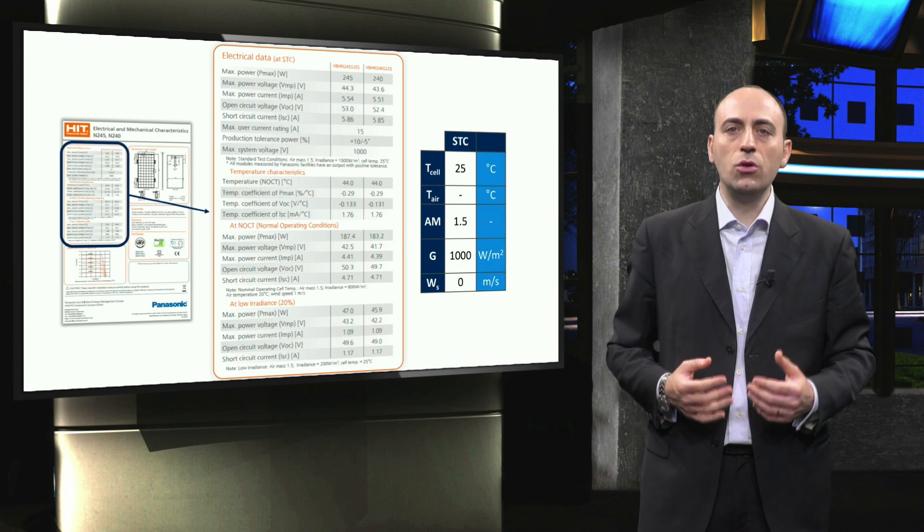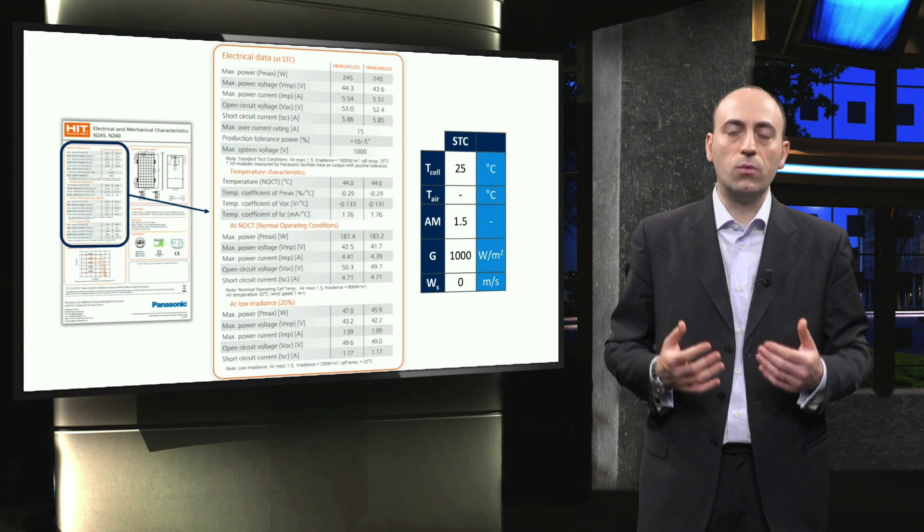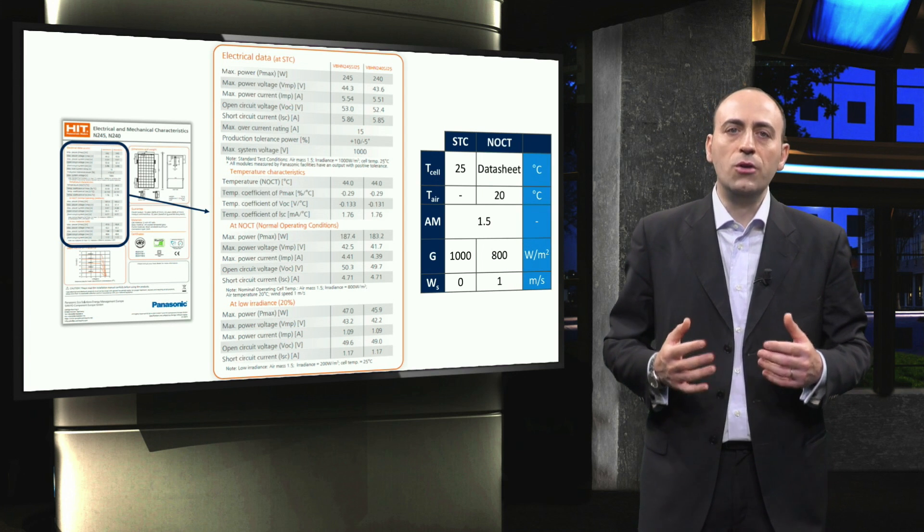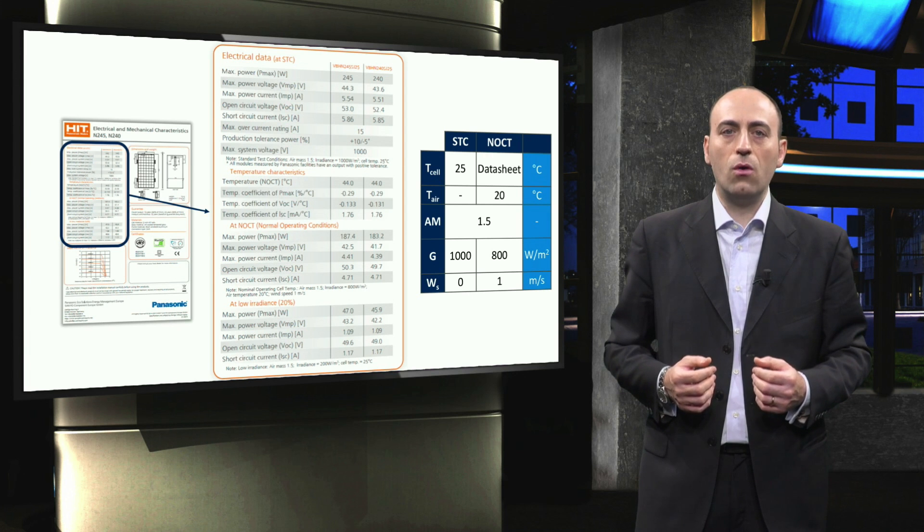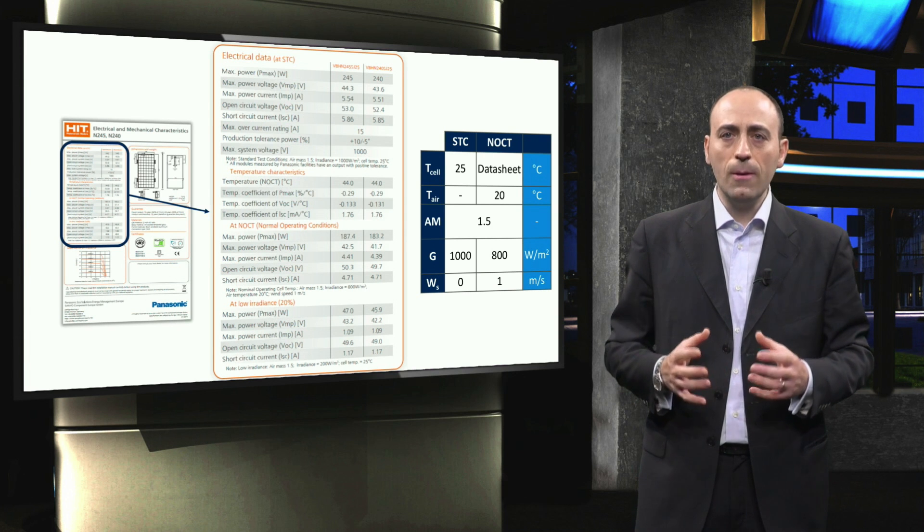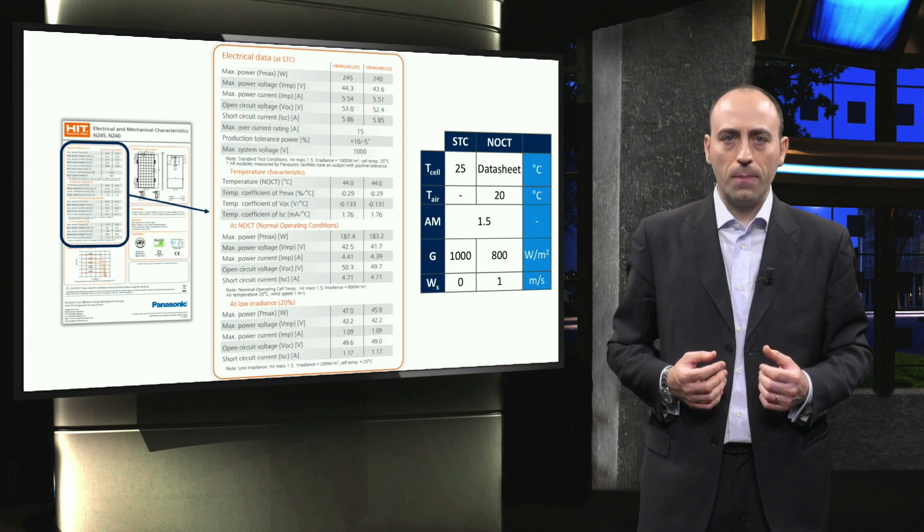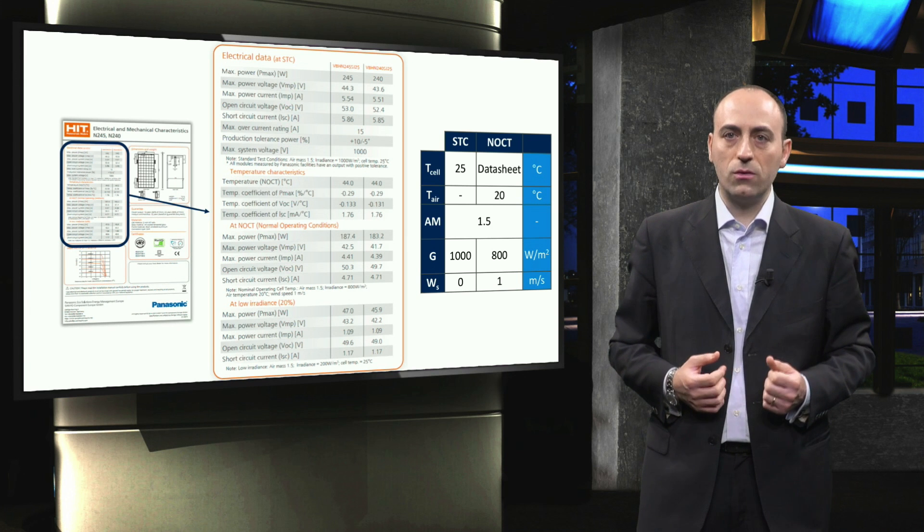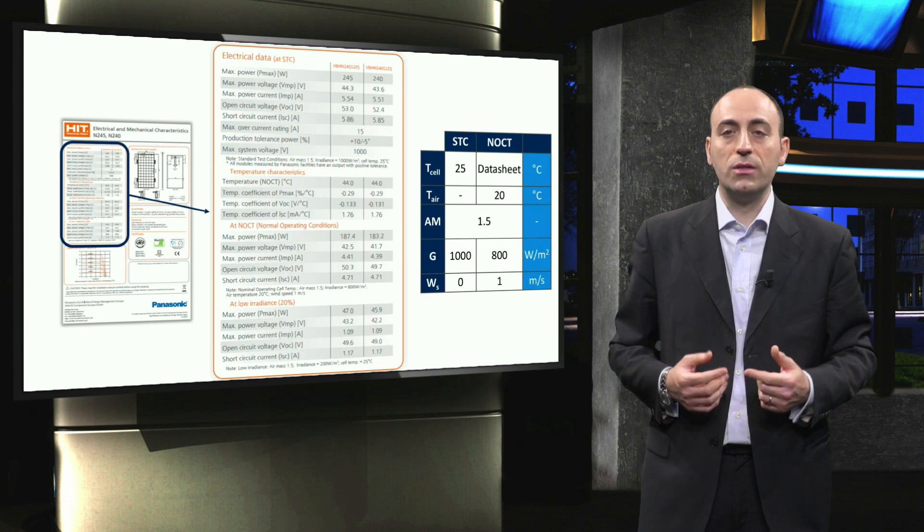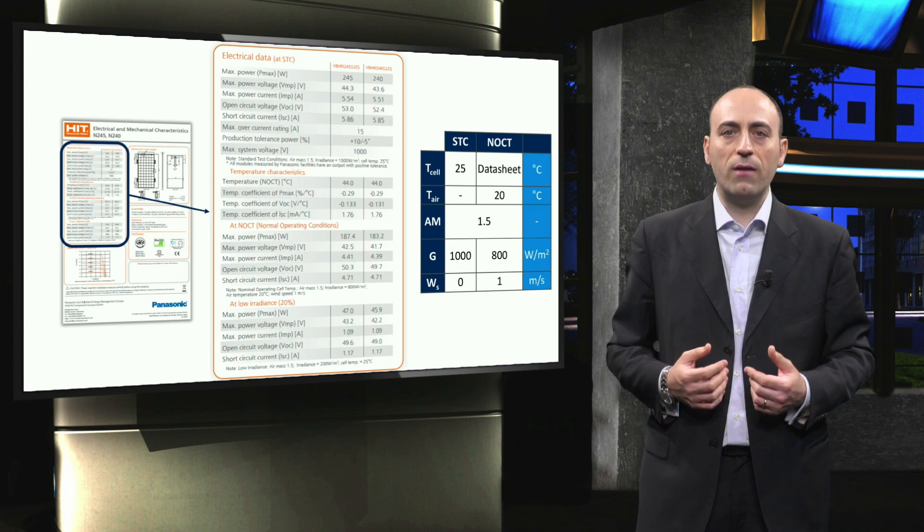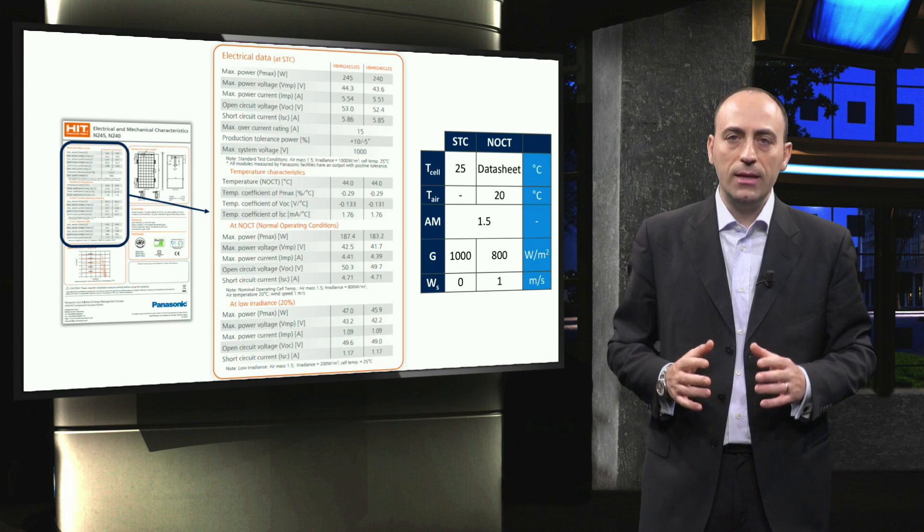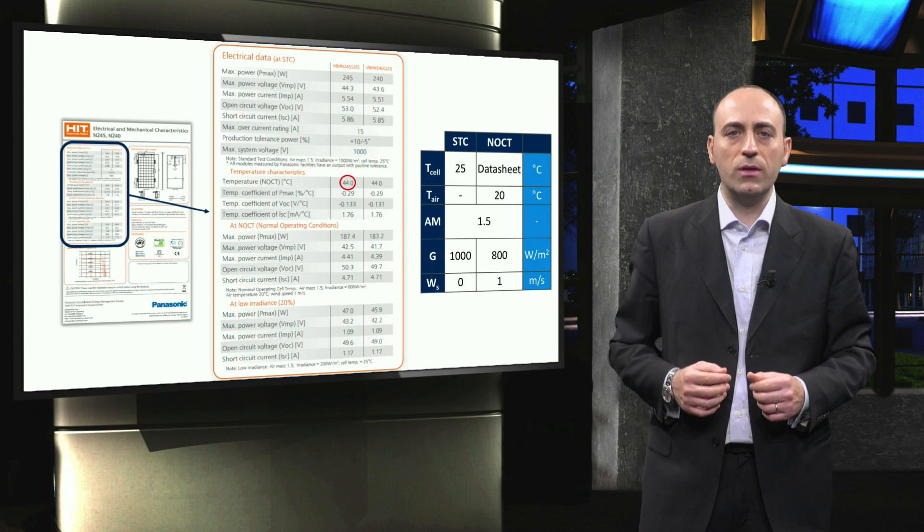However, under outdoor conditions, the modules are typically at a higher temperature than 25 degrees Celsius and at lower irradiance conditions. Therefore, the nominal operating cell temperature of a PV module is provided in the datasheet. This NOCT is the temperature at which the module will operate when it is under open-circuit conditions, when the air temperature is 20 degrees Celsius, the AM 1.5 solar irradiance is equal to 800 Watt per square meter, and the wind velocity is 1 meter per second. In this example, the NOCT is 44 degrees Celsius.